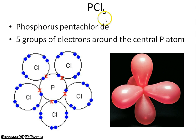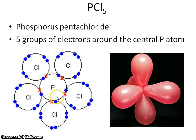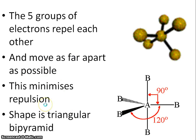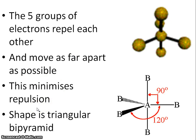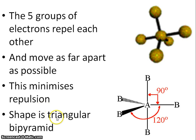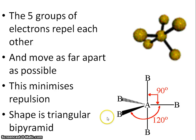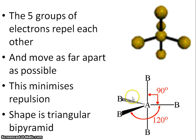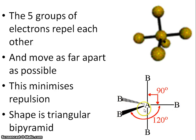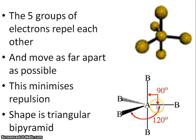Moving on to phosphorus pentafluoride — there are 5 groups of electrons around that central phosphorus atom. Repulsion gives us another shape: the triangular bipyramid. You've got a triangle in the middle of the molecule, and the bond angle there is 120 degrees.